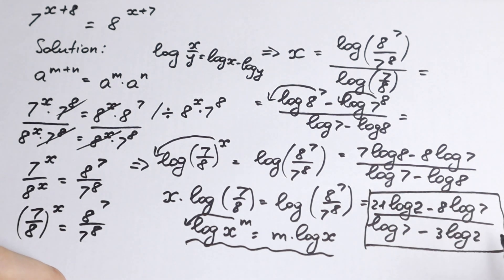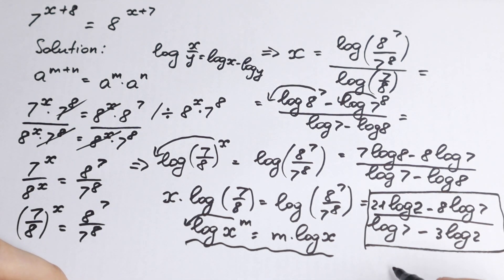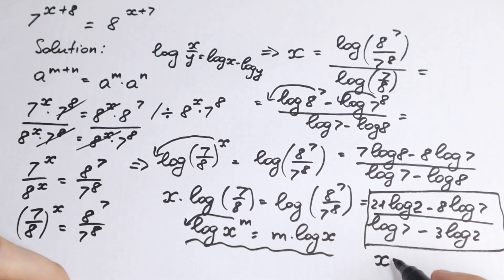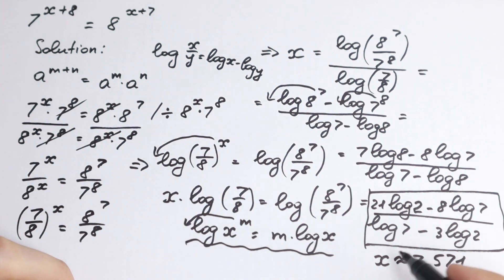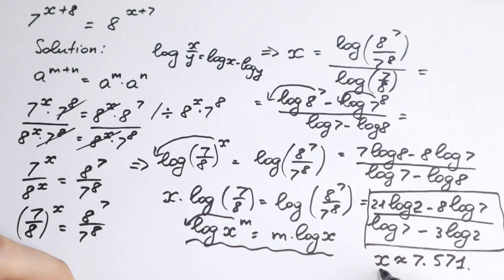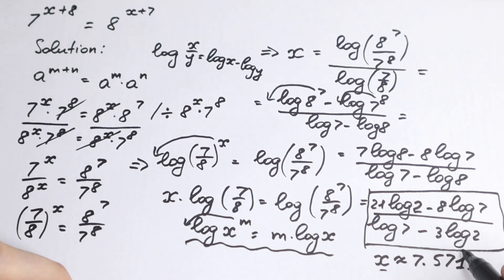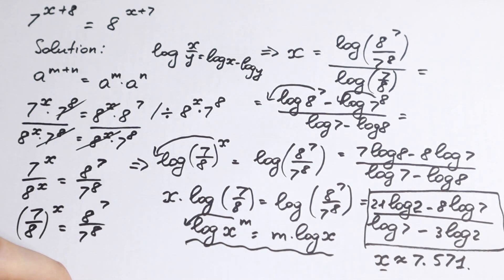If you want an approximate answer, x is approximately equal to 7.571. You can solve it with your calculator quickly. The expression we derived is the mathematical solution — the maximum simplification we can achieve, since log 2 and log 7 cannot be simplified further.